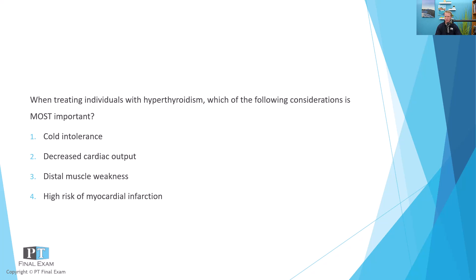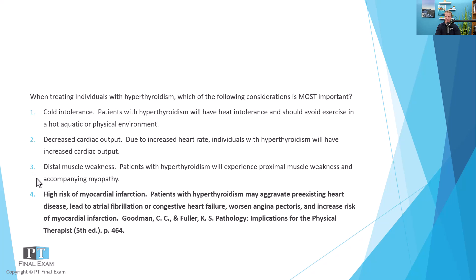When treating individuals with hyperthyroidism, which of the following considerations is most important? One, cold intolerance. Two, decreased cardiac output. Three, distal muscle weakness. Or four, high risk of myocardial infarction. The correct answer is number four: high risk of myocardial infarction.